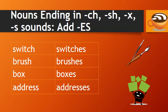For nouns ending in the CH, SH, X, or S sounds, we add ES. For example: switch, switches; brush, brushes; box, boxes; address, addresses.